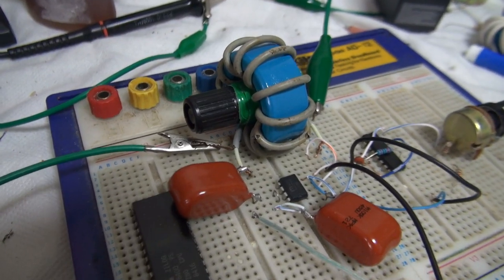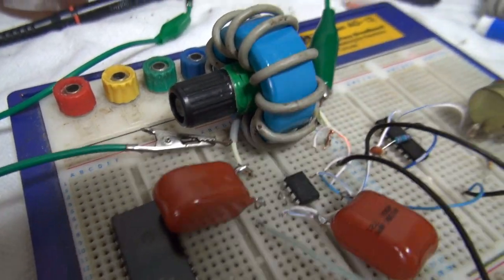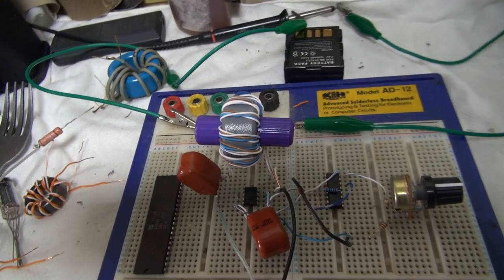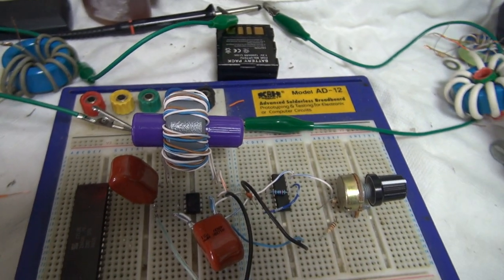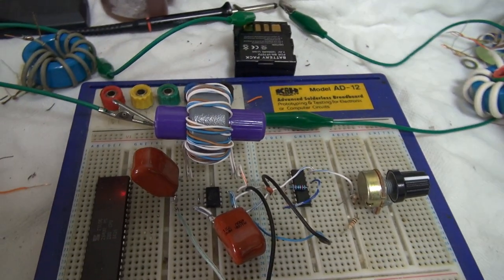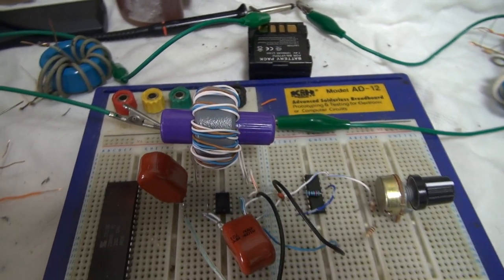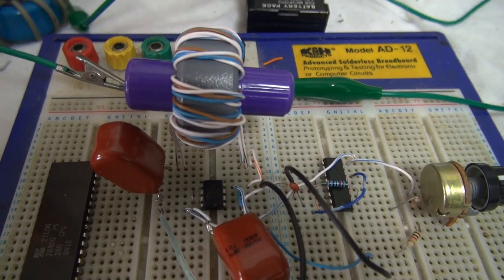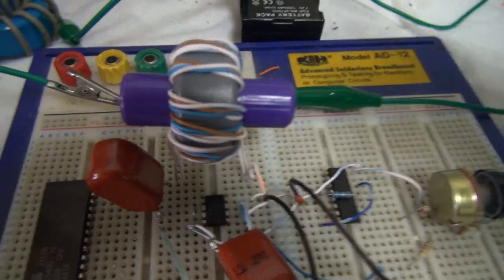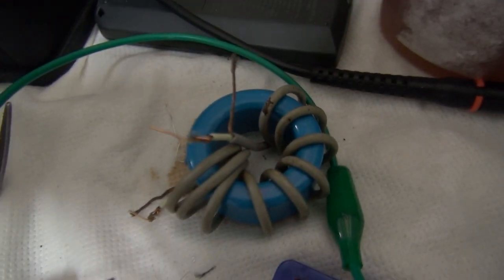And before anybody asks about this weird thing in the middle, that's just a pen cap with some tape around it to hold the wires in place. And that brings us to the gate drive transformer that I'm going to use. So this is that grey core. And the way I wound this one is I just bunched four wires together and then wound them round the core 12 times.